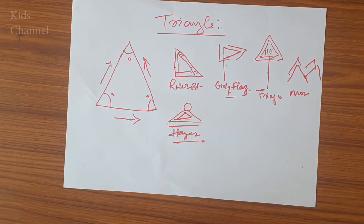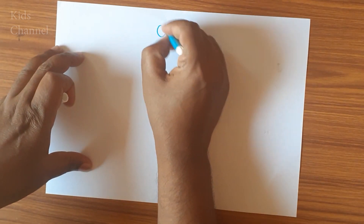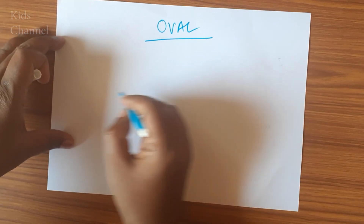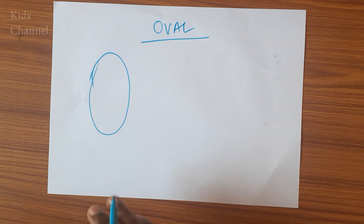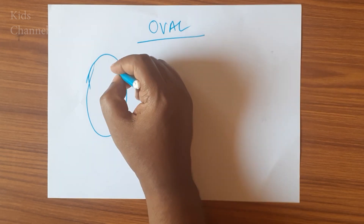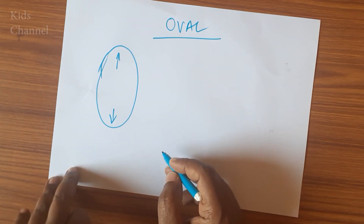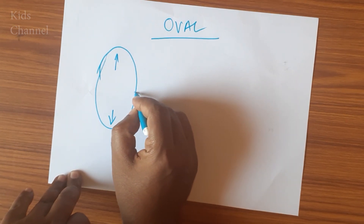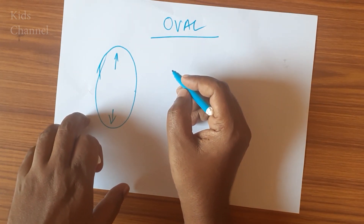Now we will see what you mean by oval. An oval is an object just like a circle, but it is wider in one direction than the other. Now we will see which objects look like an oval.